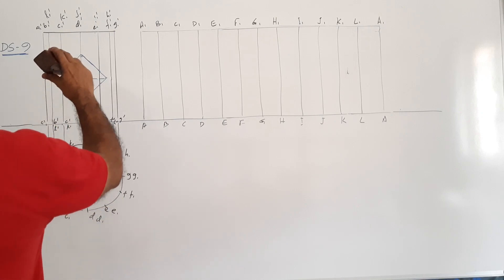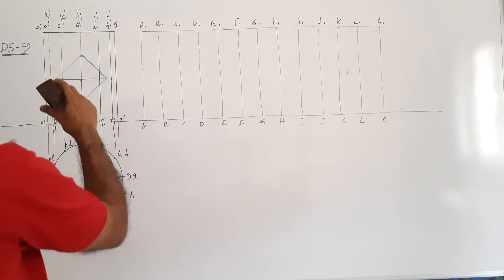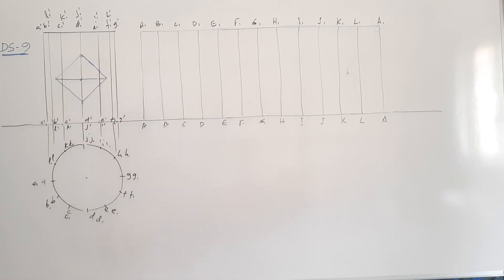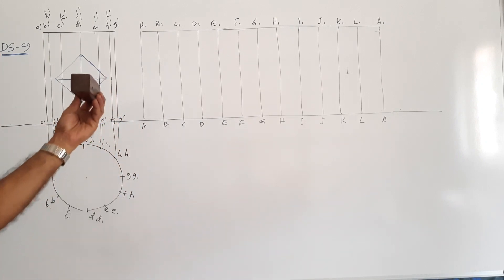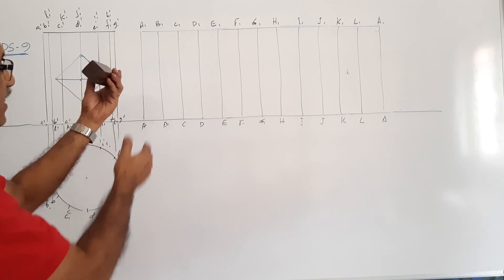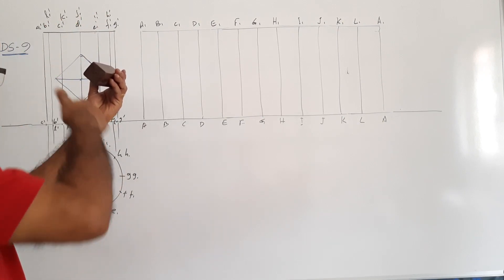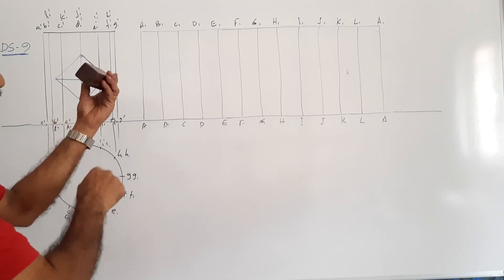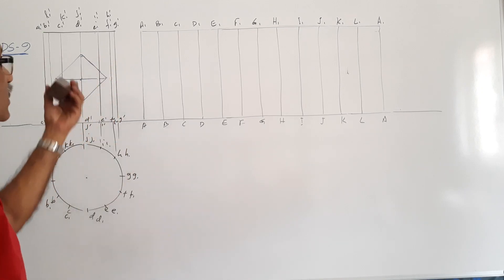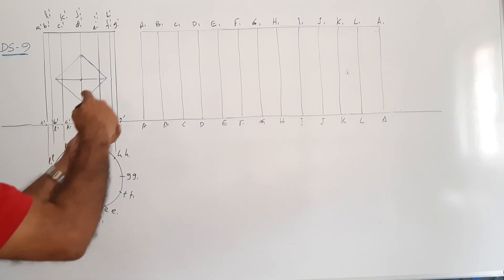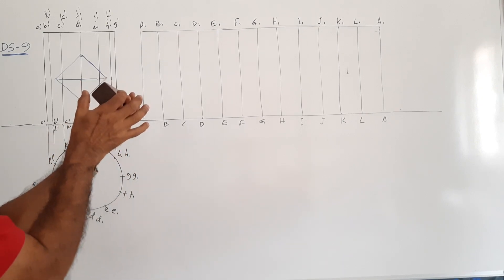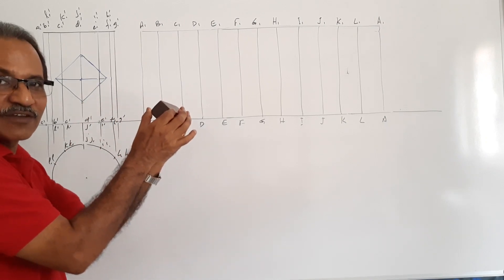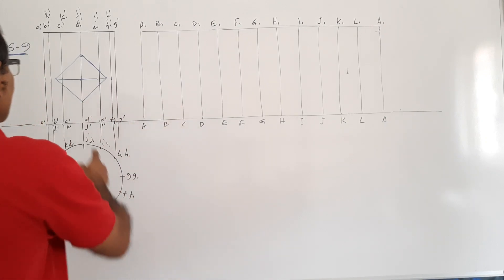A square hole is drilled. All sides of the square are equally inclined to the HP at 45 degrees. The hole is drilled through the center. The side of the hole is 25mm, so the diagonal is 25 into root 2, which equals 35.35mm.